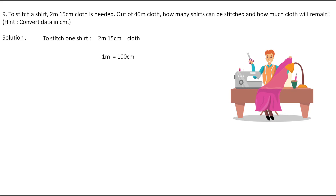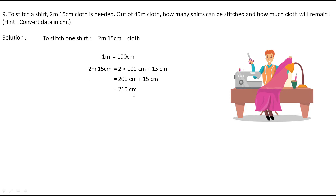First we will convert this into centimeters. We know that 1 meter equals 100 centimeters, so 2 meters 15 centimeters becomes 2 × 100 + 15 centimeters. This 15 is already in centimeters, so we multiply 2 by 100 to get 200 centimeters. Then 200 + 15 = 215 centimeters. So 2 meters 15 centimeters can be written as 215 centimeters.